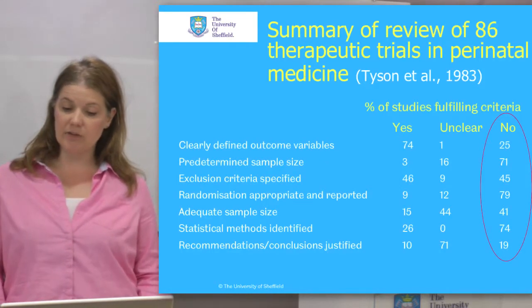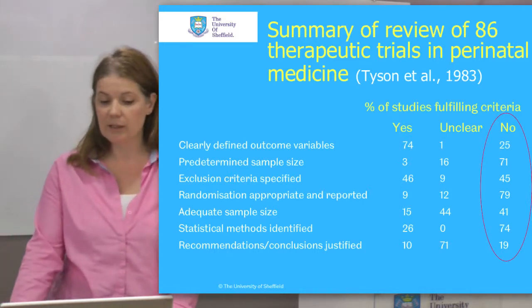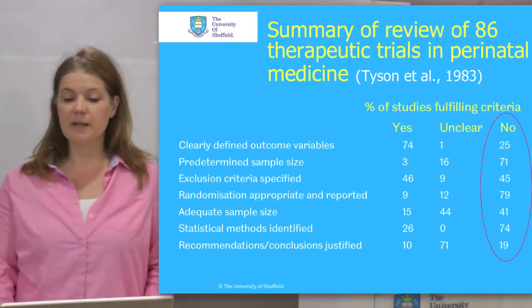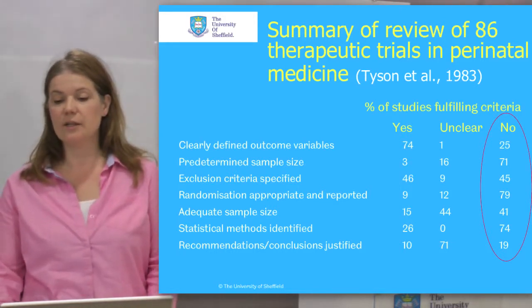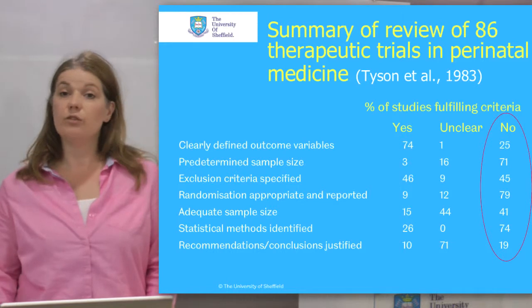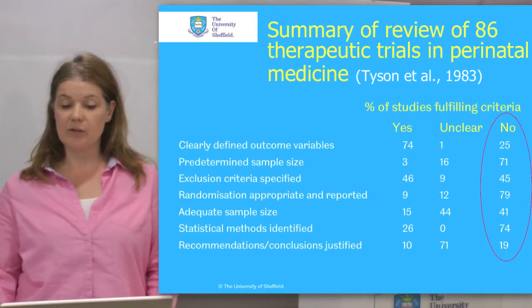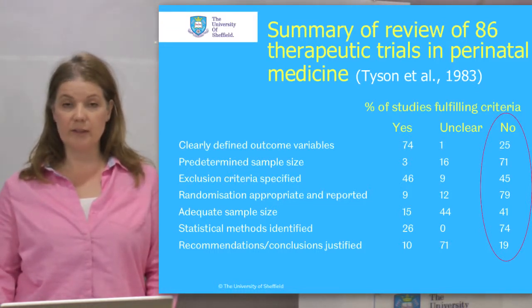Just to give you an example — again a very old but very classical study — by Tyson and colleagues. They were looking at therapeutic trials, that is randomized controlled trials, in the field of perinatal medicine: a hugely important field of research likely to have an impact on young children's treatment and care. Tyson and colleagues gathered all of the trials within a particular period — there were 86 trials — and they looked at some really important aspects of the research, which you can see on the left.